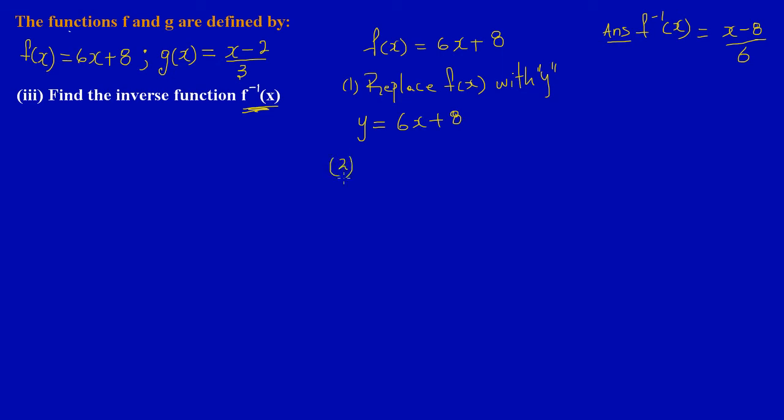And then step 2: you're going to interchange x and y. So if we're interchanging x and y here, wherever I see x I'm going to put y and wherever I see y I'm going to put x. So I'm going to see x is equal to 6y plus 8.